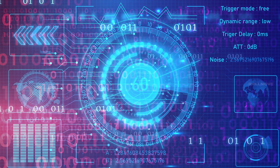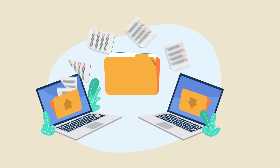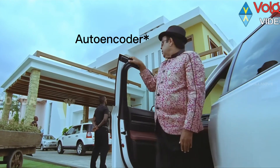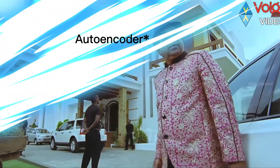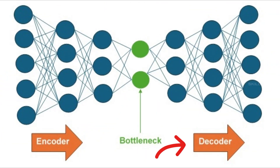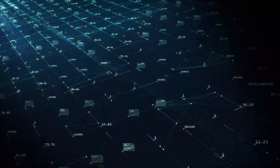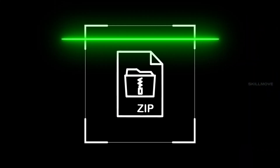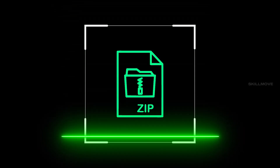First, autoencoders. Imagine your phone compresses and saves the original quality. An autoencoder is a neural network with two parts: Encoder and Decoder. The encoder compresses the input, and the decoder reconstructs it from the compressed version. Think of it like a zip file — encode is zip, decode is open the original.